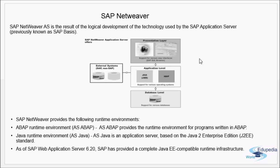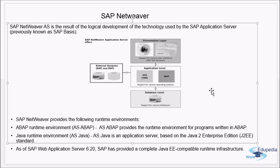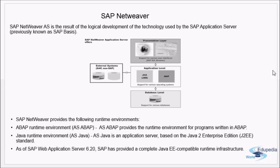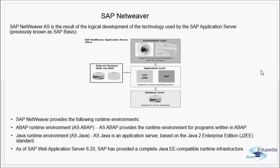SAP follows a three-tier client-server architecture with three layers: the presentation layer, the application layer, and the database level. In the presentation layer, requests come from the SAP GUI or a web browser. These requests come to the SAP application level, which can have two types of systems: the ABAP stack, used to process SAP ABAP programs, and the Java stack, used to process web requests.